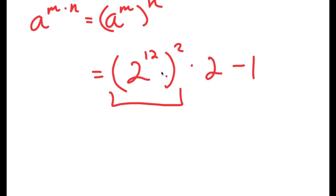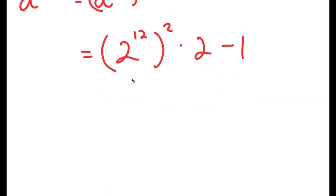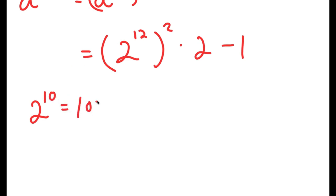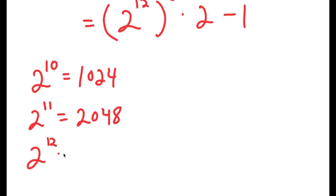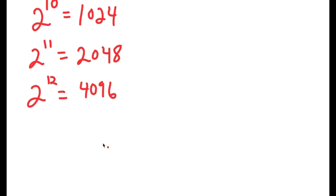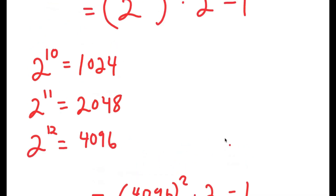Now I'm going to plug in the actual value of 2 to the power of 12, because it's small enough that we know the exact value. 2 to the power of 10 is 1024, so 2 to the power of 11 is 2048, and 2 to the power of 12 is double 2048, which is 4096. So now I get 4096 squared times 2 minus 1.